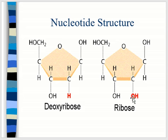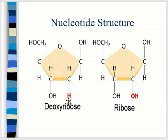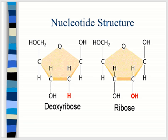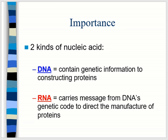These are the two sugars. You'll notice the only difference between deoxyribose and ribose is that deoxyribose has an H and ribose has an OH at one position. Otherwise the molecules are identical — it's a very subtle difference between the two.